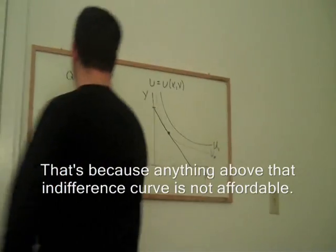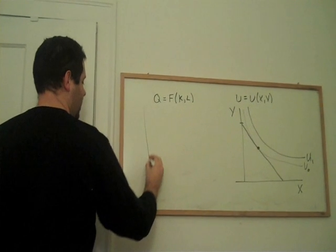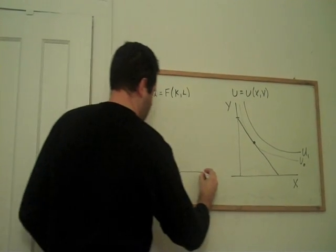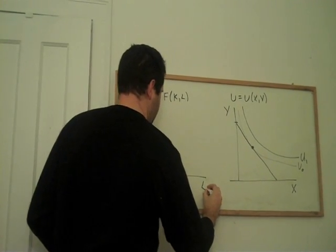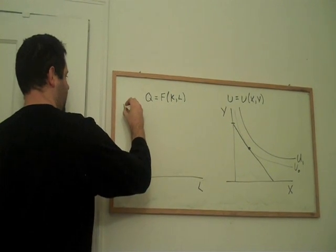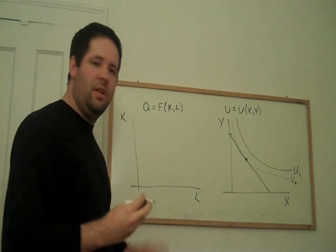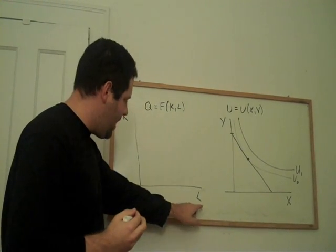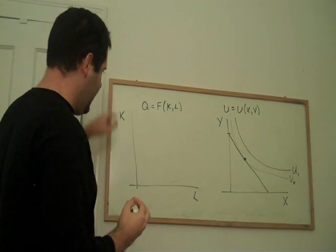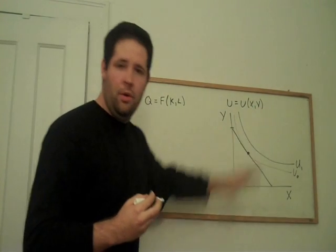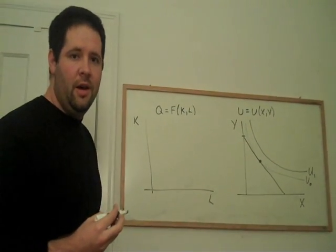Well, if we come over here to producer land, things aren't going to be much different. We're going to deal with this problem of how do we think about how inputs turn into outputs by graphing the inputs on the axis, just like we graph the inputs to our utility function on the axis.